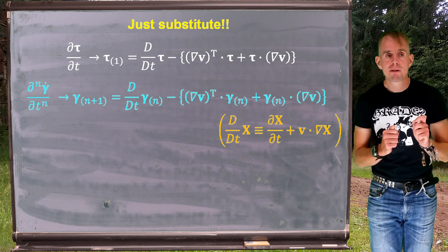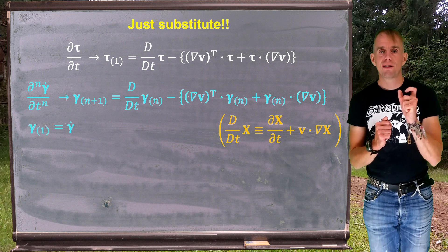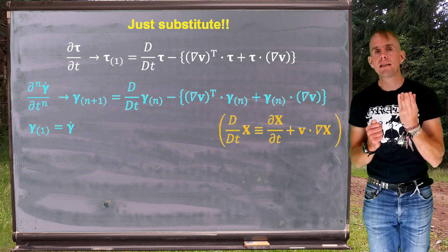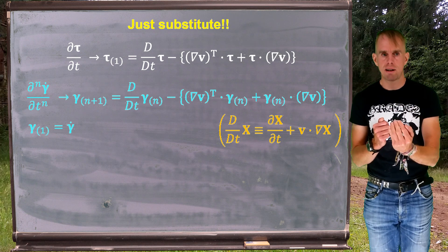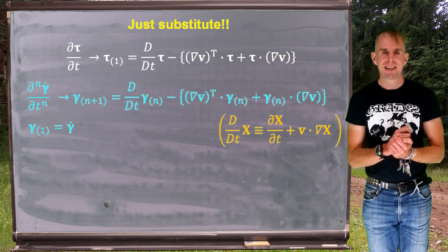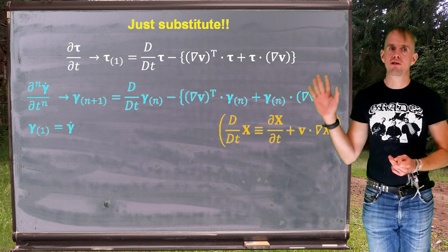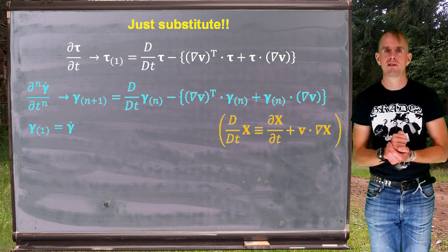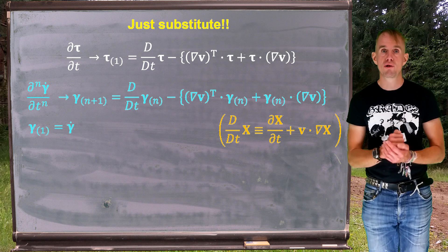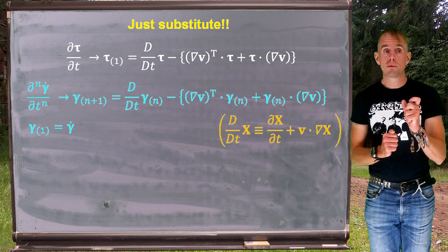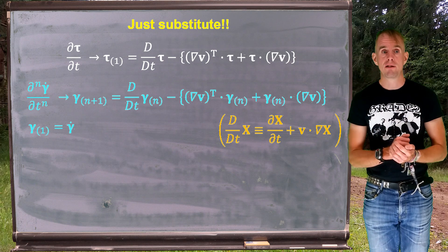If we have the first upper convected derivative of strain, it's simply gamma dot, our rate of strain tensor, second rank tensor. Again, we're not going to go through the derivations of where these upper convected time derivatives come from. Byrd, Armstrong and Haseker does that very elegantly for you, should you wish to have a look. What we're going to do is we're going to see how we use these entities.